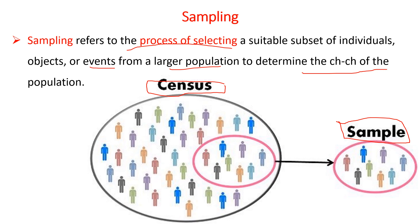Conducting a census is possible if and only if the population size is smaller. If the population size is smaller, taking data from the entire population is possible, but if it is large and not manageable, taking a sample is very essential.